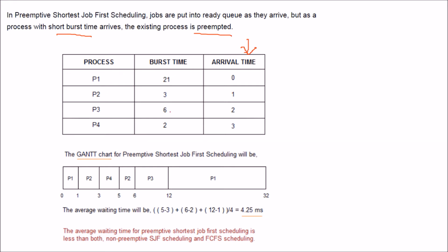At time 0, only P1 is present so P1 runs. At time 1, P2 arrives and since P2 has a shorter remaining burst time, it preempts P1. P2 completes by time 2. At time 3, P4 arrives, and since P4 has a shorter burst time than the remaining processes, P4 is given the CPU.